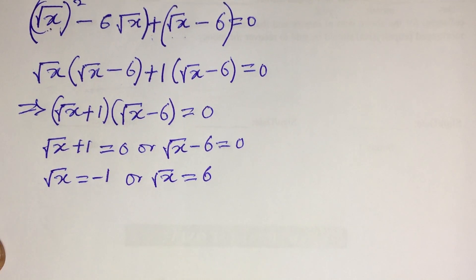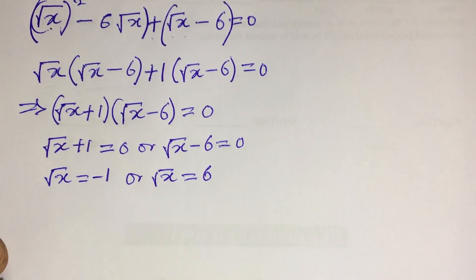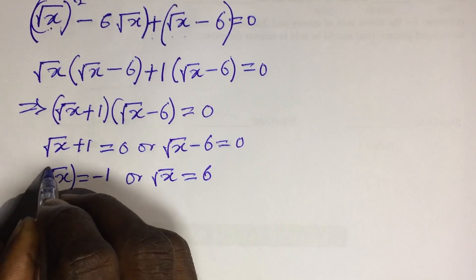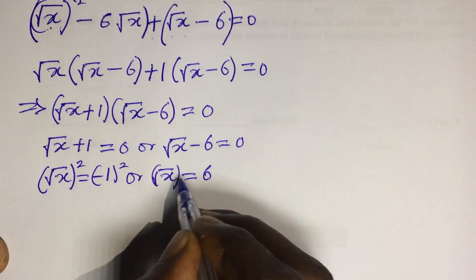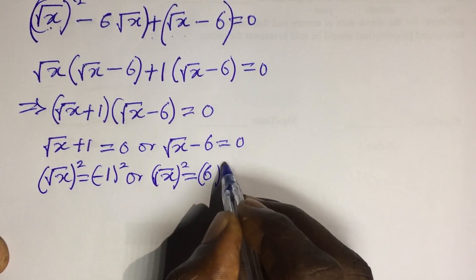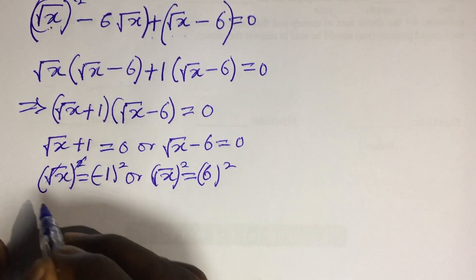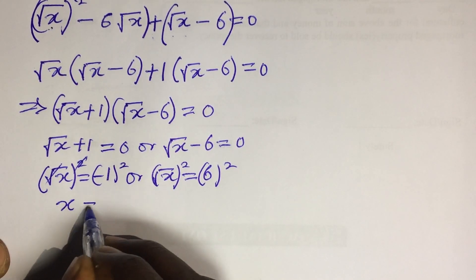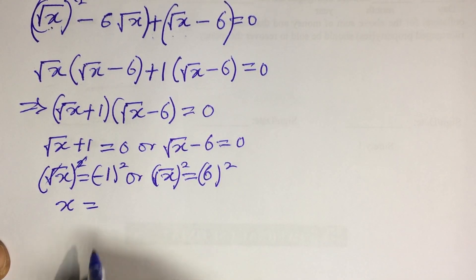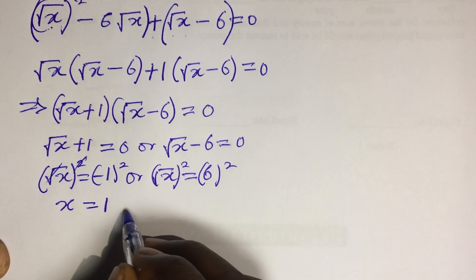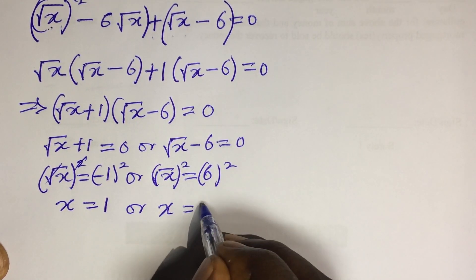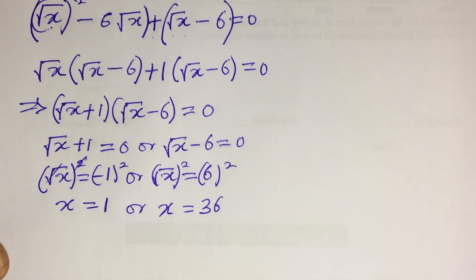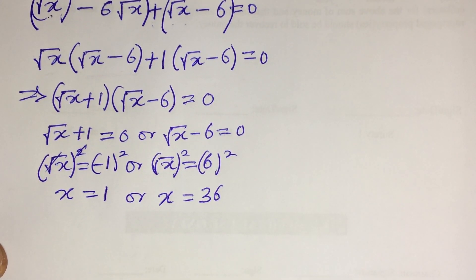We are looking for x, so we square both sides of each equation. Squaring √x = minus 1 gives x = (minus 1)² = 1. Squaring √x = 6 gives x = 36. So our two candidate solutions are x = 1 and x = 36.